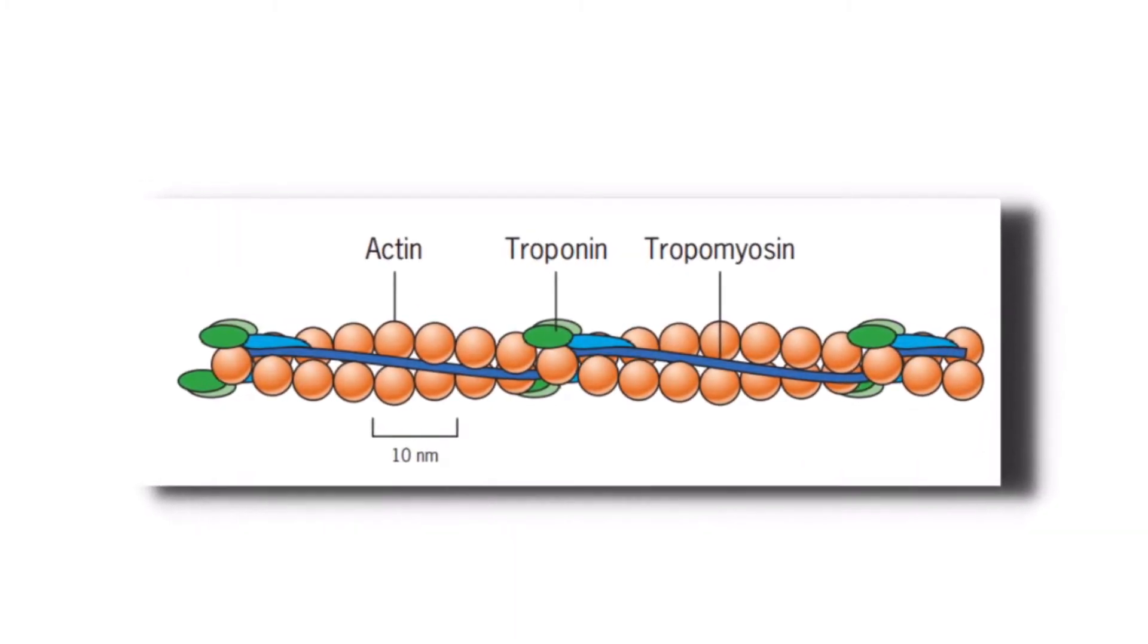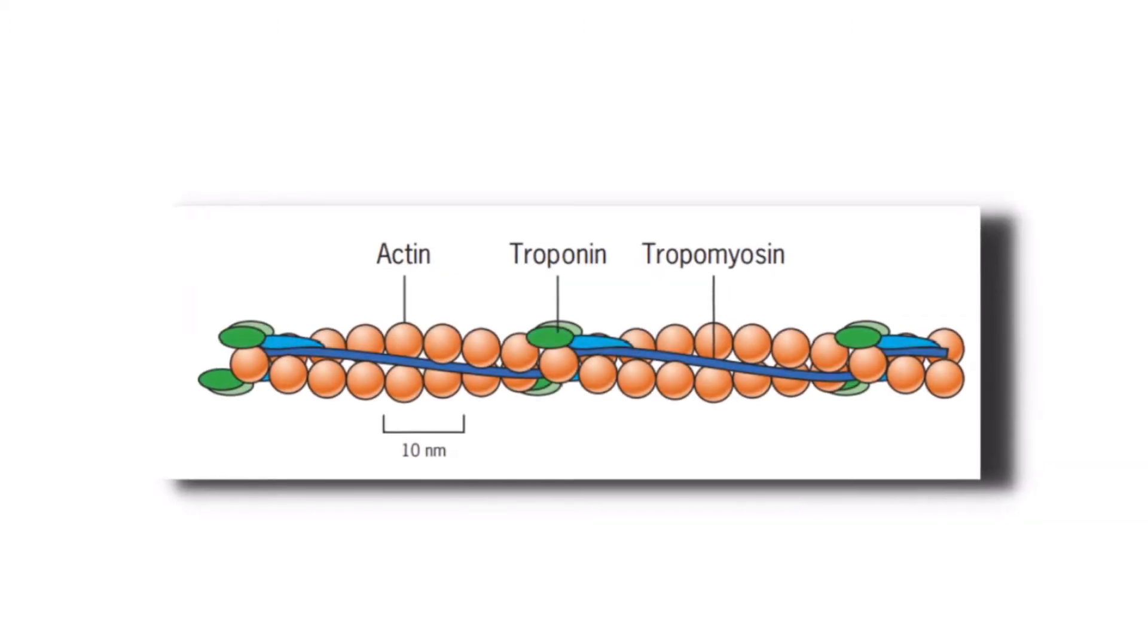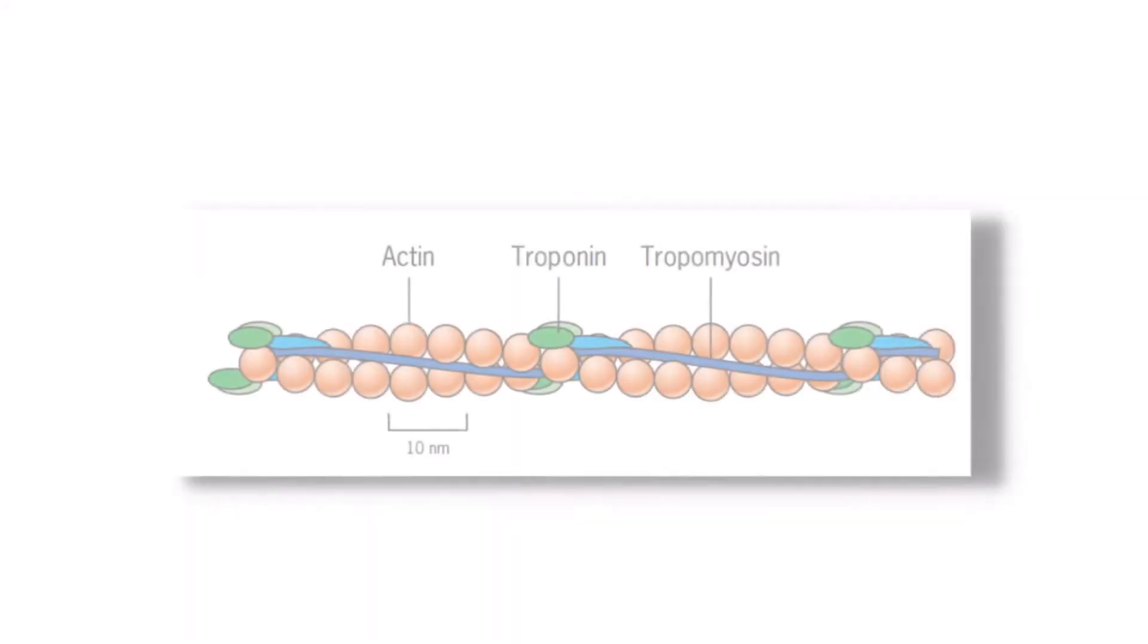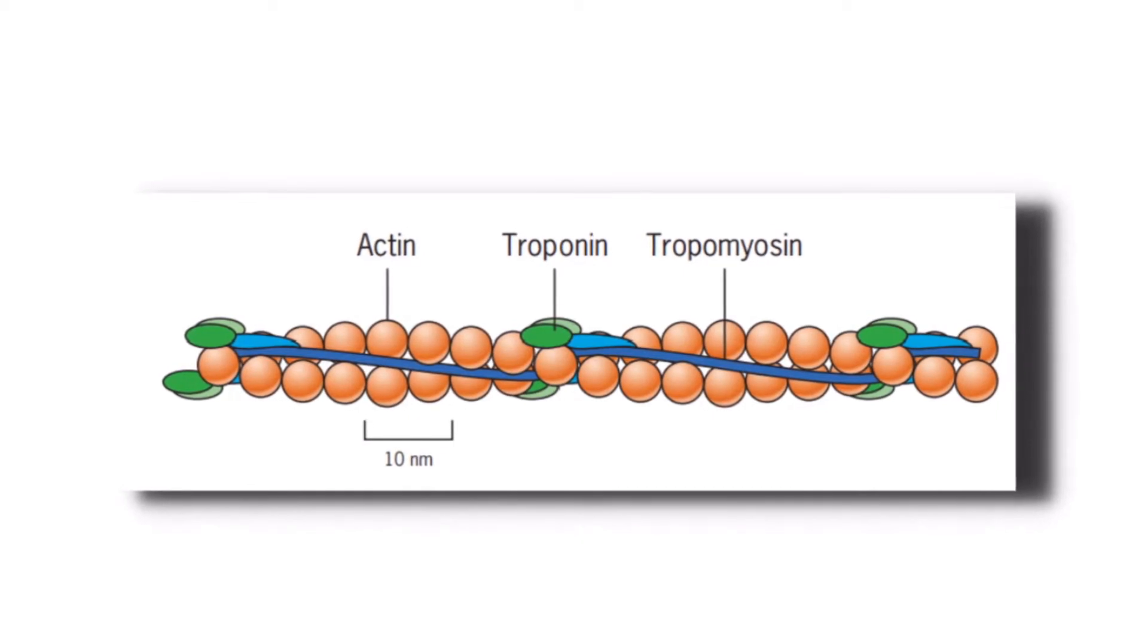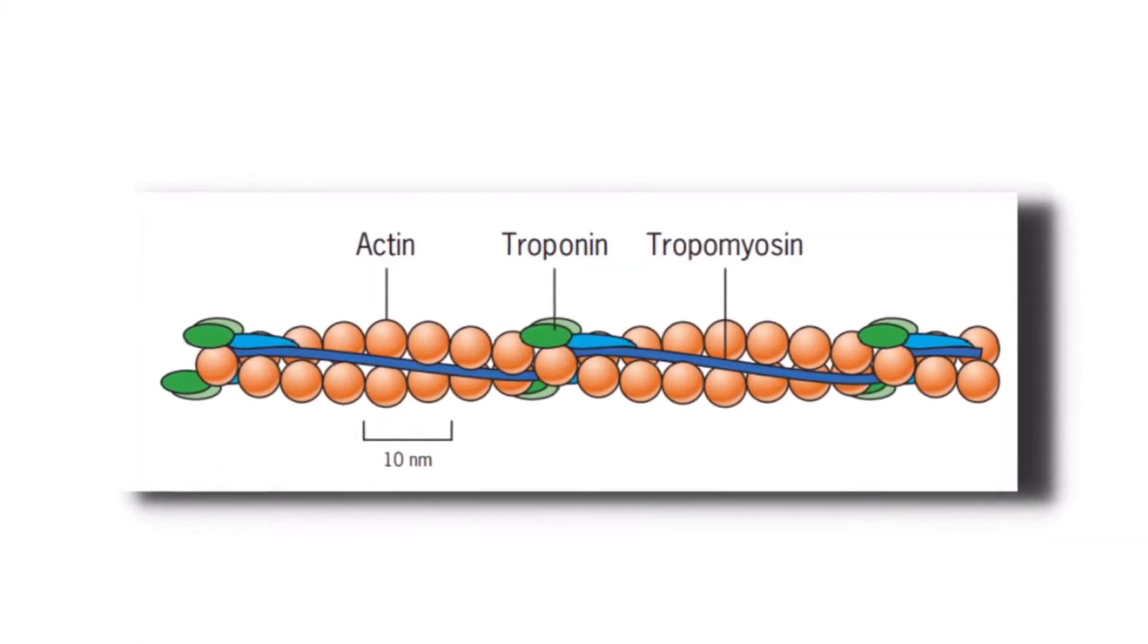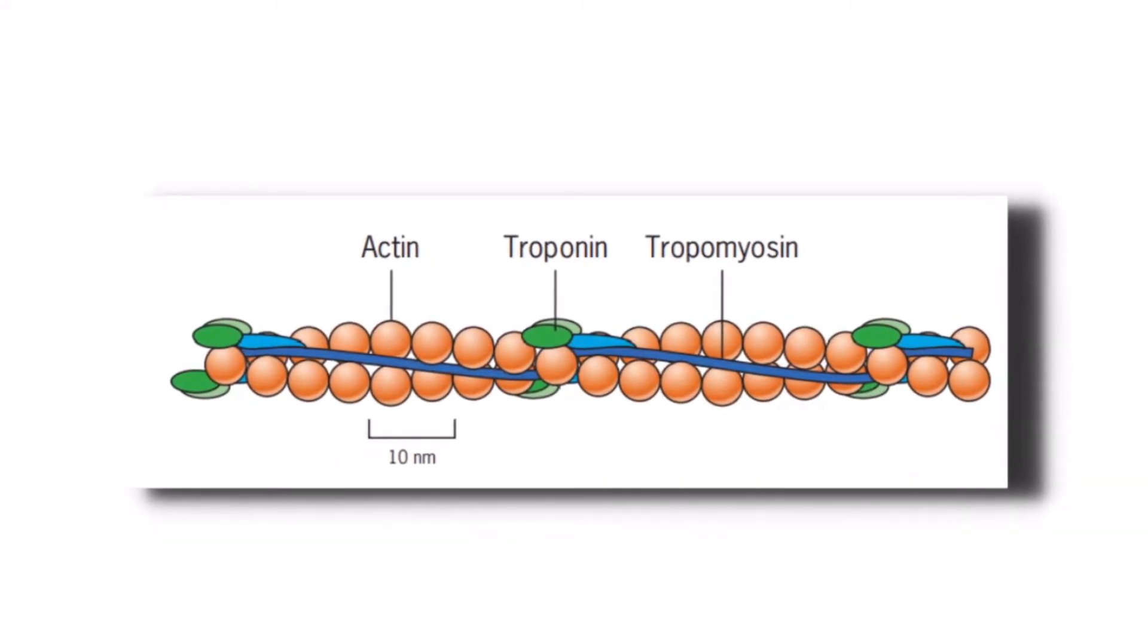The microfilaments are approximately eight nanometers in diameter. And in the presence of ATP, the G-actin monomers, like I said, will polymerize to form this flexible and helical filament. The actin filament essentially is a two-stranded structure with two helical grooves running along its length.